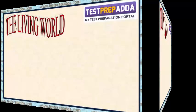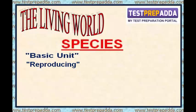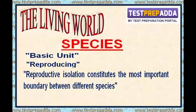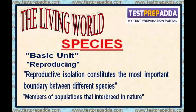What is species? Species is the basic unit of classification. In this group, organisms are closely related and capable of reproducing with each other, but different species do not reproduce. So reproductive isolation constitutes the most important boundary between different species. The concept of biological species defines the species as members of populations that actually interbreed in nature. Biological species are not defined according to similarity of appearance, although appearance is helpful in identifying species.